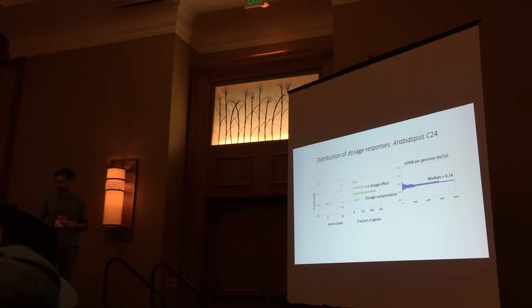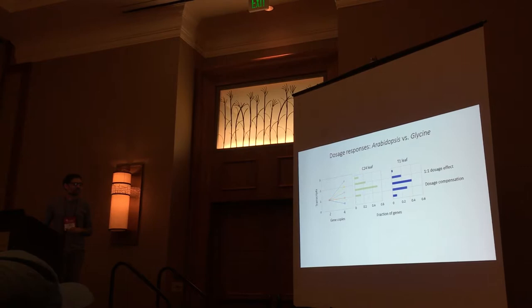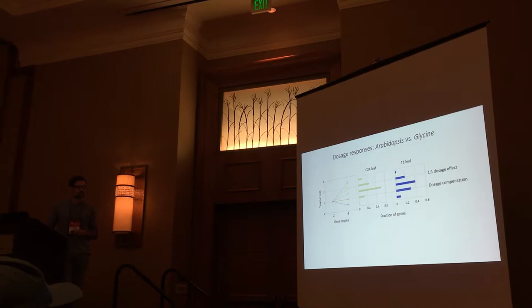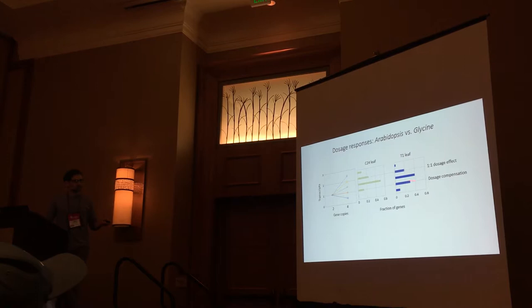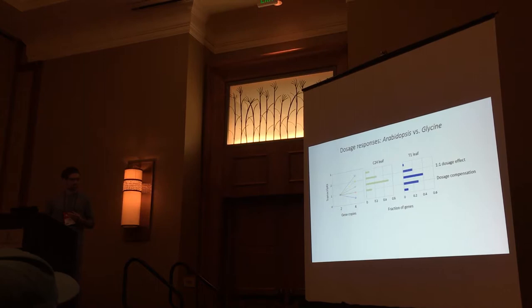Comparing the C24 distribution to one of our Glycine allopolyploids, T1, the two show roughly similar distributions, with the intermediate dosage response again being the most abundant. But there's perhaps a shift towards smaller or even negative responses in the established allopolyploid relative to the nascent autopolyploid, suggesting that perhaps over time there is a shift downwards in dosage responses.